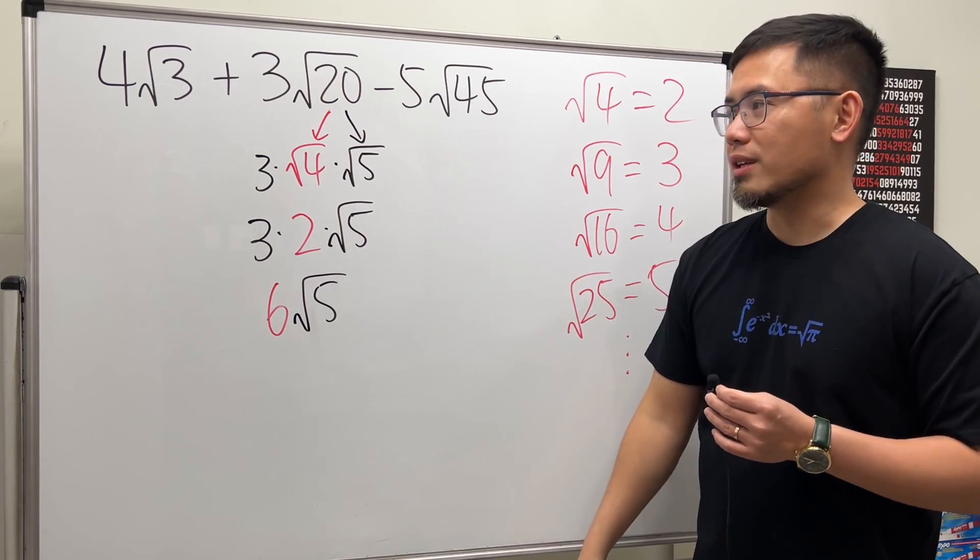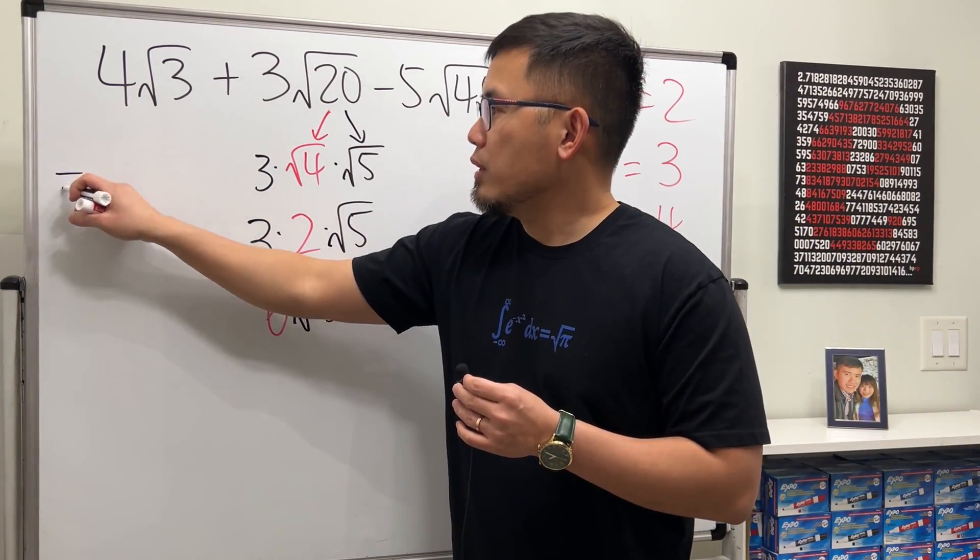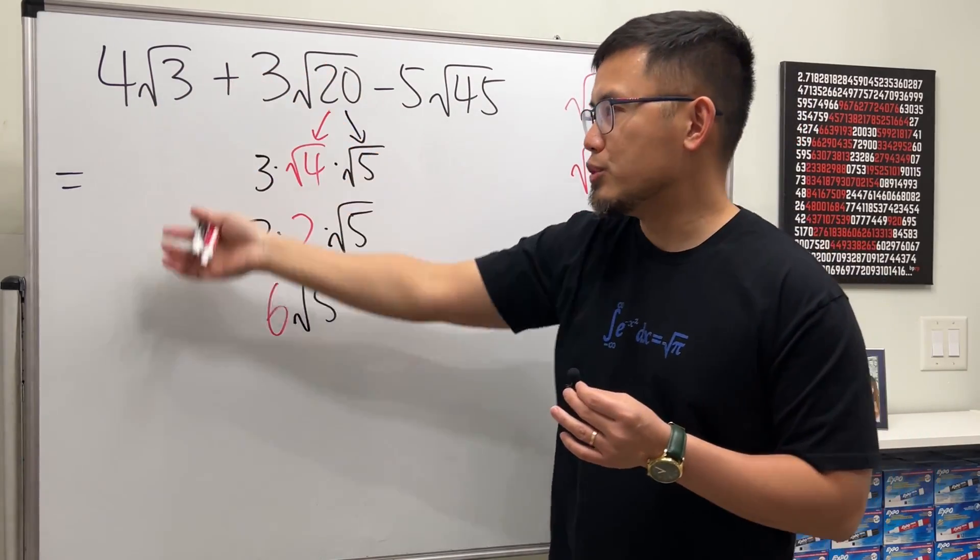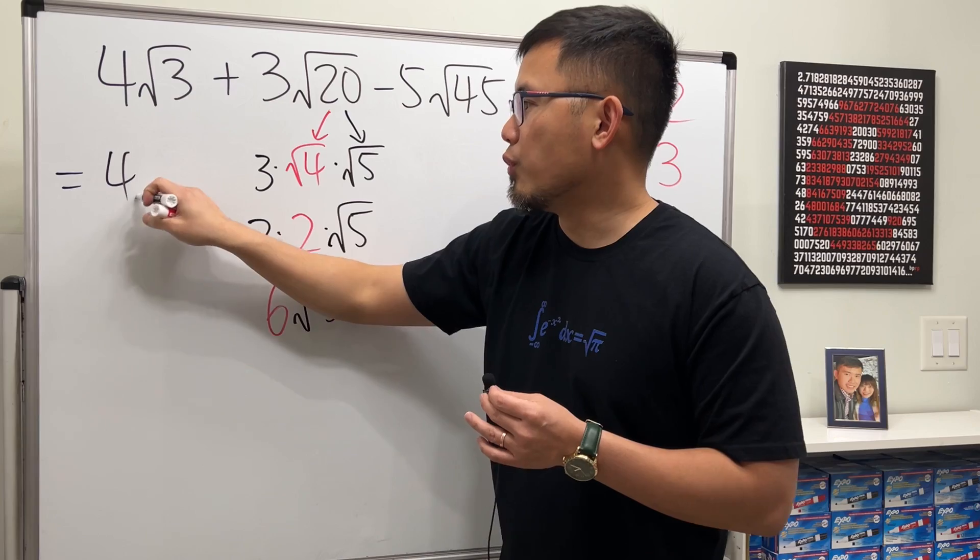And of course, let's go ahead and finish this question as well. For the first one, 4√3, √3 cannot be reduced, so I'm just going to keep it. So 4√3, and then it was plus with this.